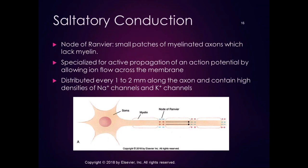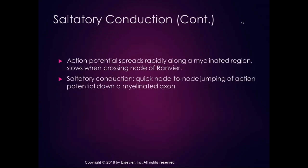The nodes of Ranvier were named by a neurologist named Ranvier. One to two millimeters is significant because we know that a local potential spreads about one to two millimeters. As the action potential spreads rapidly along a myelinated region, it slows down when it crosses a node of Ranvier. This quick node-to-node jumping of the action potential down a myelinated axon is called saltatory conduction. The depolarizing potential spreads rapidly along myelinated regions and slows when it crosses the unmyelinated node of Ranvier, then jumps to the next node — speeding up conduction.